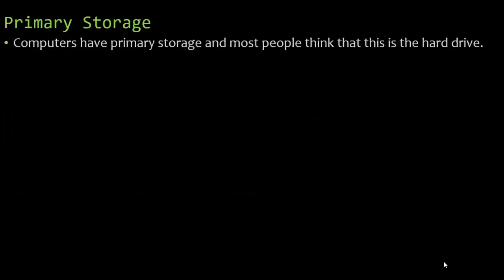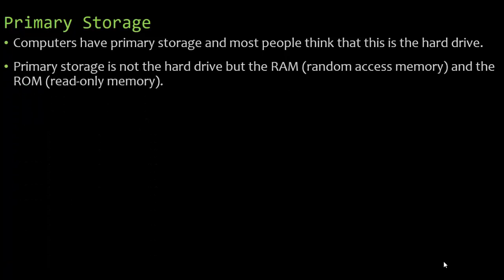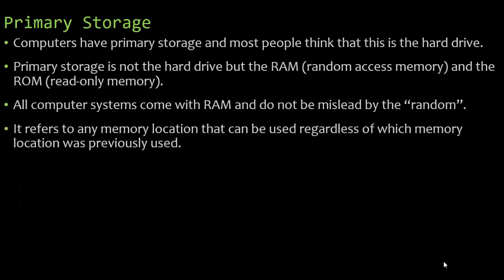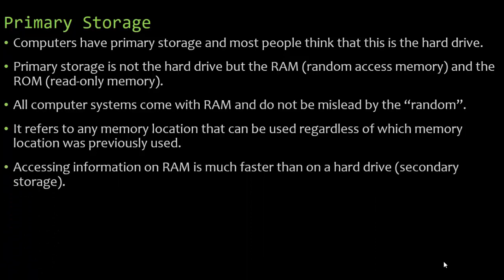Computers have primary storage, and most people think that's the hard drive — it is not. Primary storage is the RAM, which stands for Random Access Memory, and the ROM, which is Read Only Memory. All computer systems come with RAM, and don't be misled by the word 'random.' It refers to any memory location that can be used regardless of which memory location was previously used.